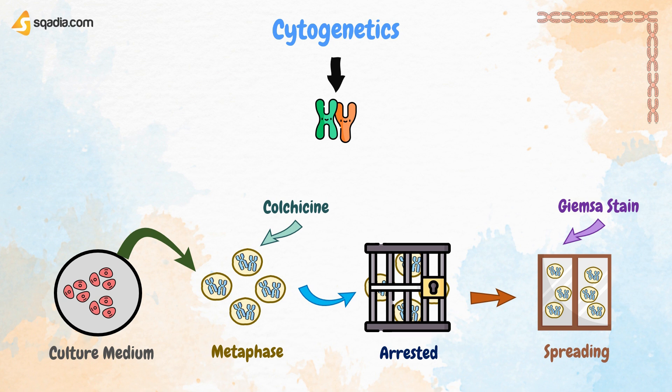Traditionally, a photographic positive is then made, and the chromosomes are cut out and assembled on a card in pairs in order of size, sometimes in conventional groups.